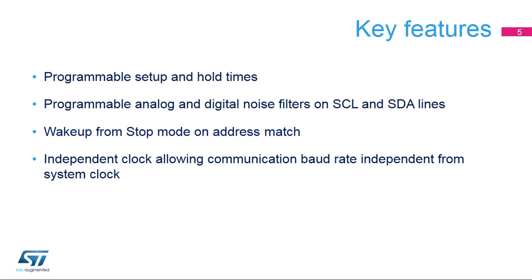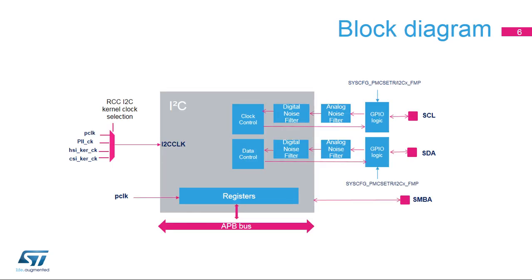The peripheral can wake up the MCU from stop mode when an address match is detected, and it has an independent clock domain, allowing a communication baud rate independent from the system clock. The registers are accessed through the APB bus, and the peripheral is clocked with the I2C clock, which is independent from the APB clock. The I2C clock can be selected from among the PLL, APB clock, the high-speed internal RC oscillator with a frequency from 8 to 64 MHz, and the low-power internal 4 MHz RC oscillator.